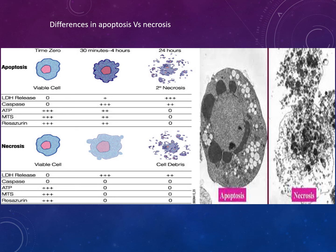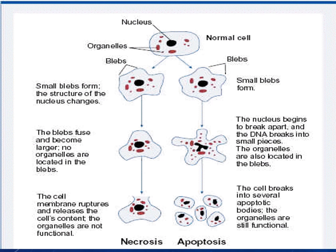Here's a diagram showing the differences between apoptosis and necrosis — you can see the cell shapes changing from time zero to 30–40 minutes to hours, and how the concentrations of MTT, caspase, LDH, and ATP change. There is also a microscopic image showing the appearances of apoptosis and necrosis. Another diagram shows the nucleus and organelles entering blebs. In apoptosis, the nucleus breaks apart, DNA breaks into small pieces, organelles are located in blebs, and the cell breaks into several apoptotic bodies with organelles still functional.